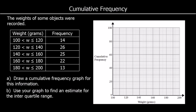Another question — this time we've got the weights of some objects. Between 100 and 120 grams there are some objects, and then between 100 and 140 we're going to add on the next one: 14 plus 26 is 40. And add on the next one: 40 plus 25 gives 65, then 65 plus 22 is 87.